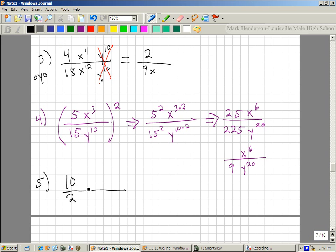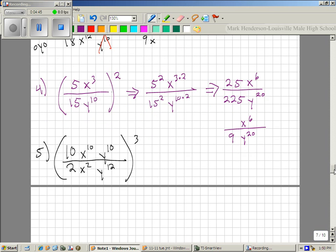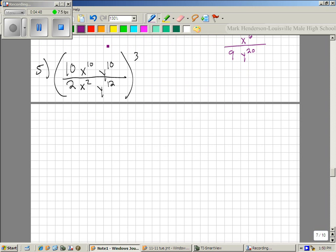I want you to do 10 over 2, x to the 10, y to the 10 on top, x squared, y to the 12 on the bottom. And then we're going to take that all to the third power. Okay. Here's how we're going to do it. There's actually a really easy way to do this. You can actually reduce the stuff inside first, which gives you 5 x to the 8 over y to the 12 or y to the 2. Take that to the third, which gives you the same answer as most of you all got.